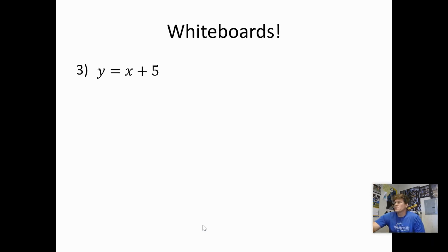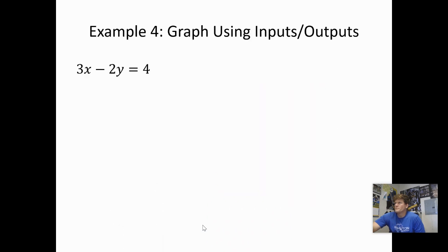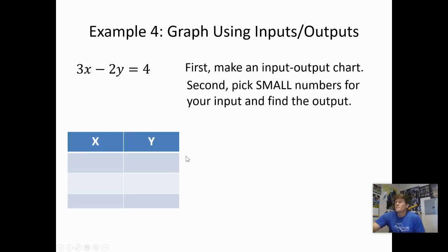I'm going to skip this one here and get to our last example. Example number 4. 3X minus 2Y is equal to 4. So again, make that table. Make that input-output table. Then pick small numbers. I like starting off with 0. If I plug in a 0, this goes away completely. Negative 2 times Y equals 4. So that means I could divide both sides by that negative 2. 4 divided by negative 2 gets me negative 2. There's my output.